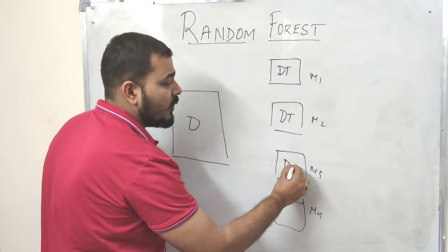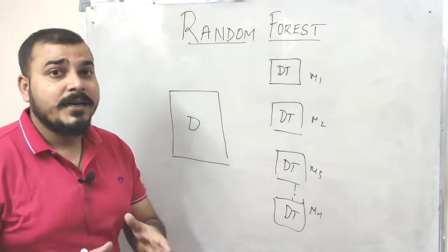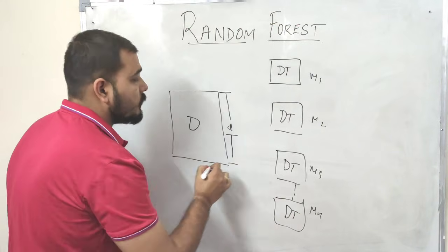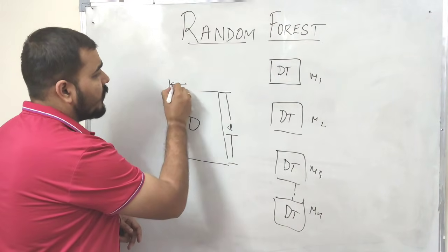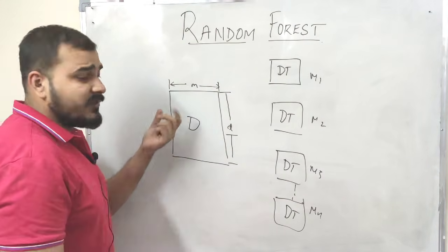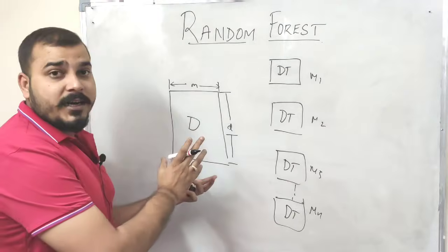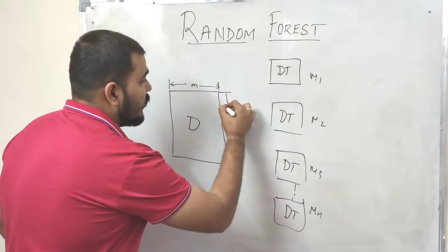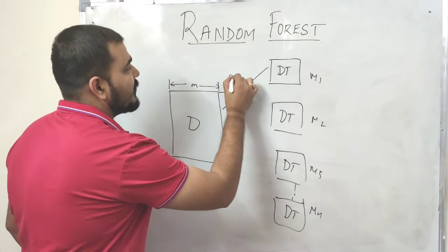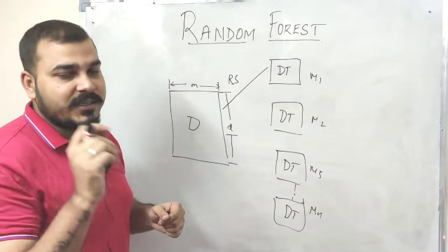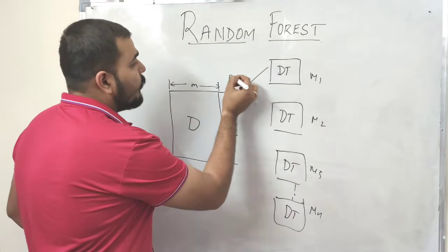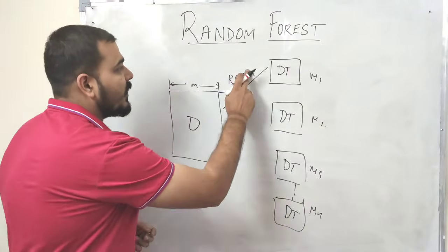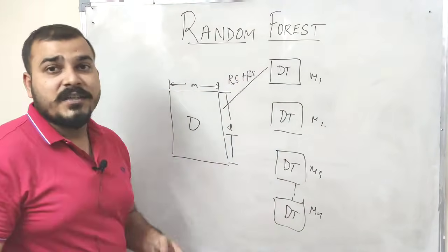As I explained in the bagging technique, suppose this dataset has D records and M number of columns or features. What we do is pick a sample of rows — row sampling with replacement — and also pick a sample of features, which I'll call feature sampling. So we are doing row sampling and feature sampling, both with replacement.